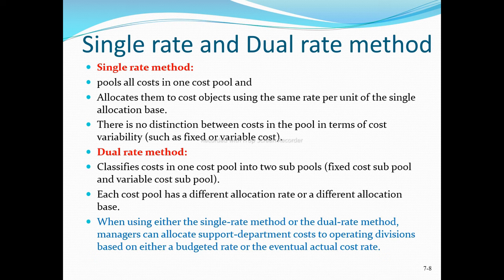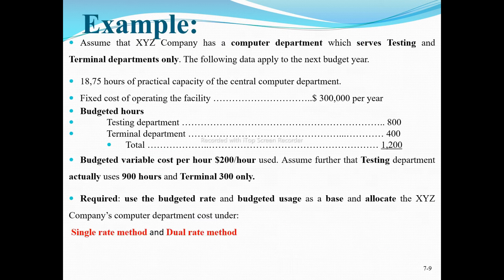Let's take an example. Assume XYZ Company has a computer department which serves the testing department and terminal department only. The computer department is the supporting department, while the testing department and terminal department are the operating departments.